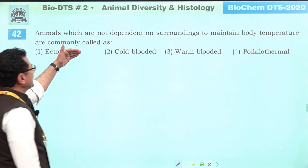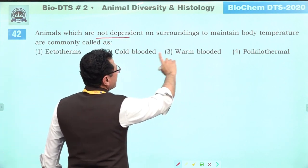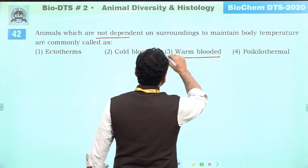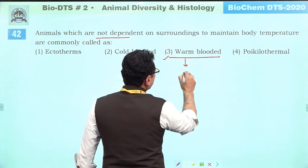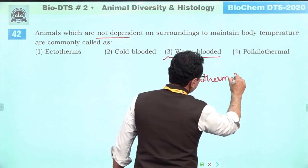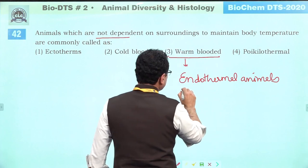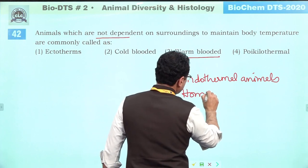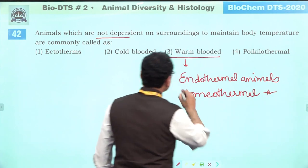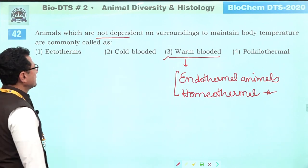Animals not dependent on surrounding medium to maintain body temperature are endothermal (homeothermal) animals, commonly called warm-blooded animals. They include birds and mammals. Answer is three.